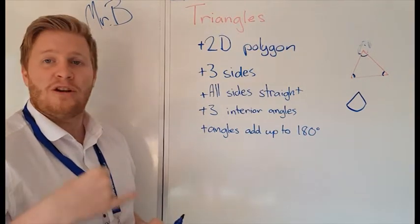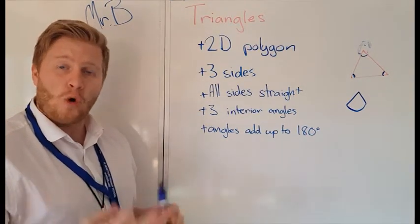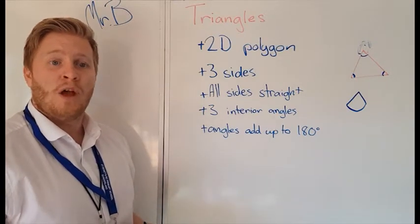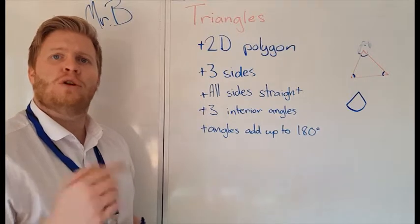you might have a 10, a 70, and a 100, something like that. All your angles would come to 180 degrees no matter what triangle. So there are different types of triangles, so we're going to start looking at them now.